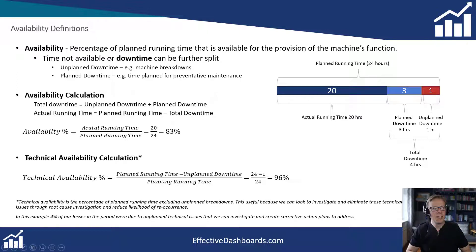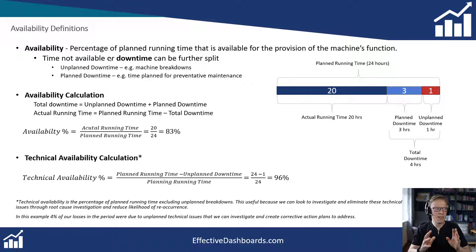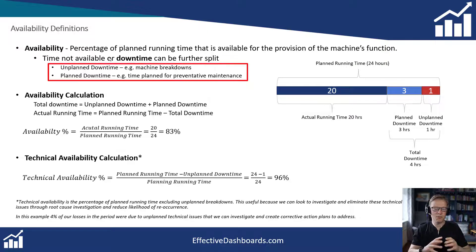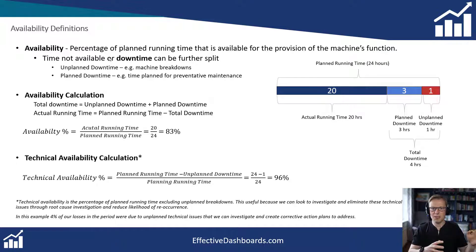Availability is the percentage of planned running time that is available for the provision of the machine's function. The planned running time is quite important — basically it looks at how much time you expected or planned to run that machine and how much of that planned running time was it actually available to provide its function. Now we've got planned and unplanned downtime. Previously, looking at mean time between failure, we only looked at unplanned downtime. Availability is going to look at both unplanned and planned downtime, so regardless of whether it's planned or unplanned, both mean the machine is unavailable — one is down for preventative maintenance, the other is a breakdown. They're different in nature but ultimately the effect on availability is the same: it's not available.